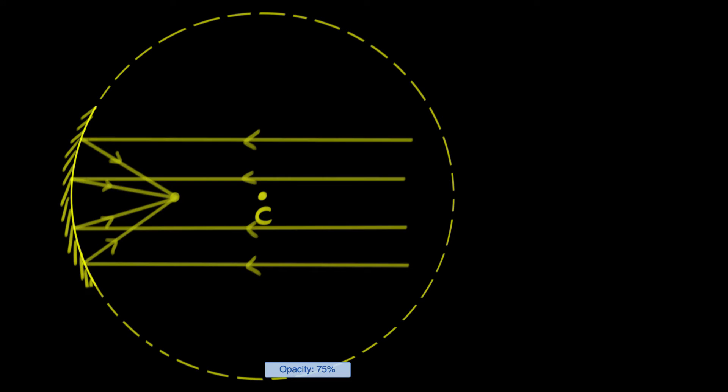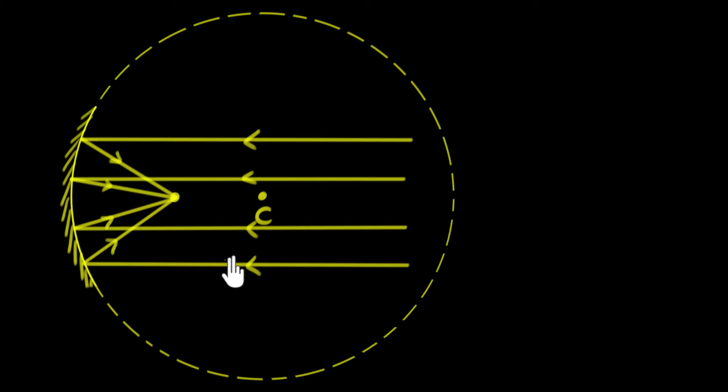In a previous video, we saw that if you take a mirror which is a part of a sphere, we call such mirrors spherical mirrors. And if this mirror is small enough — meaning if it's a small enough part of the sphere — then if you insert parallel rays of light, it will almost get focused at a single point. In this video, we'll talk about exactly where these parallel rays of light get focused after reflection.